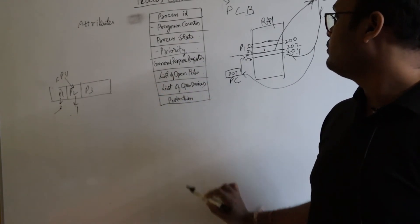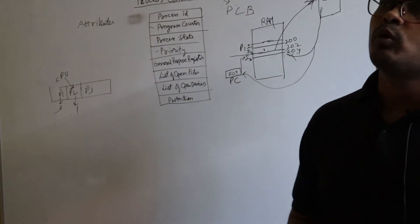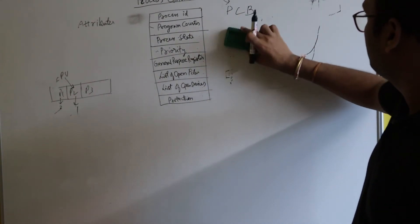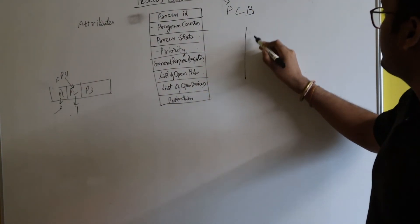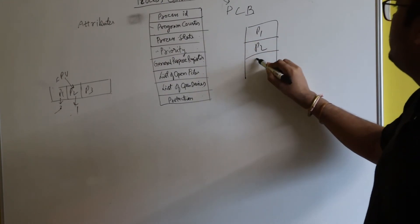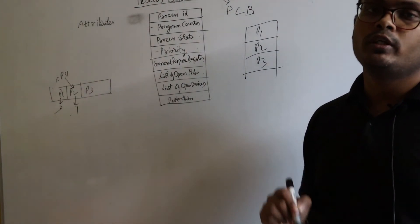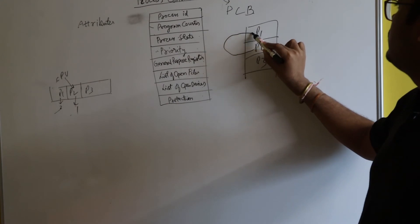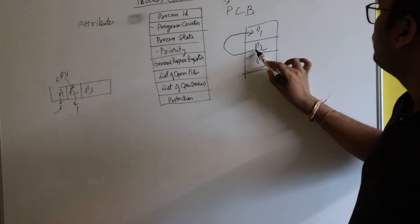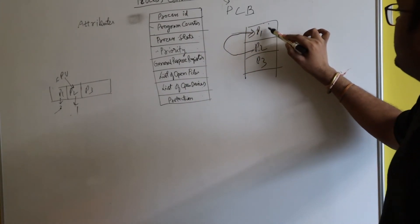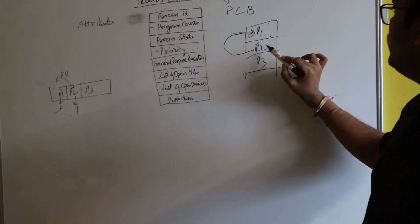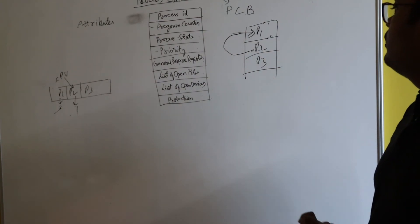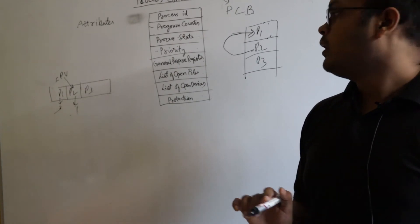The last attribute is protection. Protection means each process has to be protected from another process. Several processes are in RAM — P1, P2, P3 — and each process has been allocated some memory space. It is the task of the operating system to ensure that no process tries to access the region allocated to another process. P2 should not try to access the region allocated to P1, and P1 should not access the region allocated to P2 or P3. Protection is a big topic.